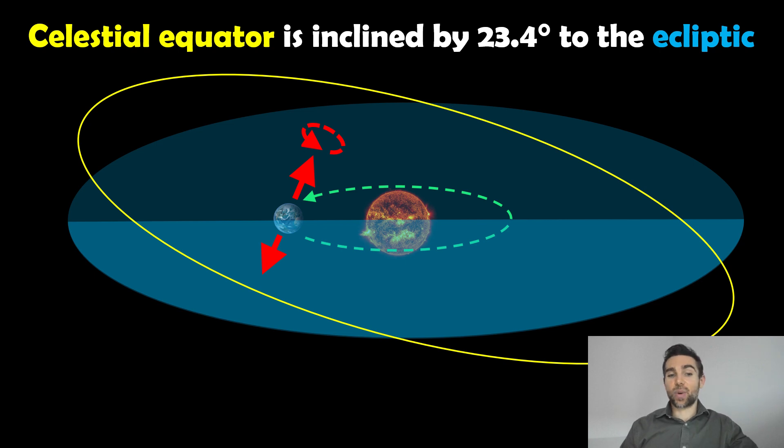The celestial equator is inclined to the ecliptic by about 23.4 degrees or thereabouts, and that's basically related to the axial tilt of Earth. So that's the rotation axis of Earth—it's tilted over by that amount. That means the celestial equator is inclined to the ecliptic by that amount as well.